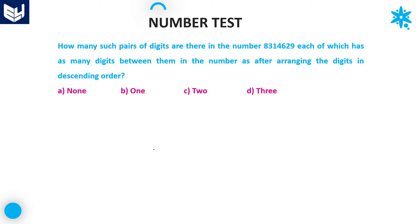Hi everyone, welcome back. In this session I'm going to discuss number test with a different model — that is, how many pairs of digits we need to find after arranging the given number in ascending order or descending order. These model problems are very important from an examination point of view, so please listen carefully.